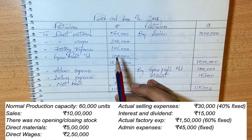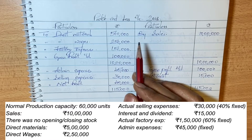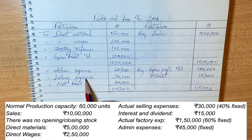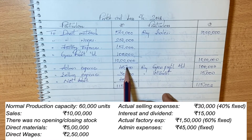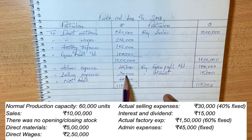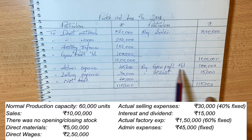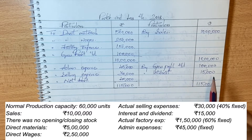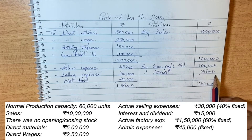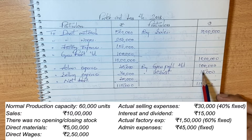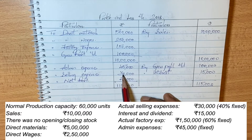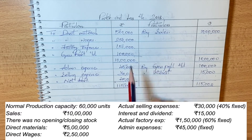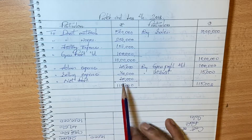Moving to the profit and loss account: administration expenses are 45,000 and selling expenses are 30,000. Total income is 1,00,000 plus interest and dividends of 15,000, giving 1,15,000. After deducting expenses of 45,000 and 30,000 (75,000 total), the net profit as per financial accounts is 40,000.